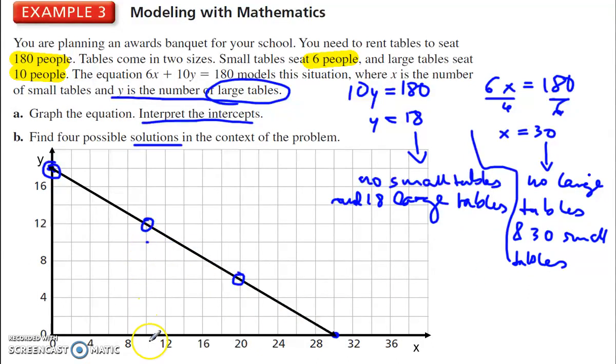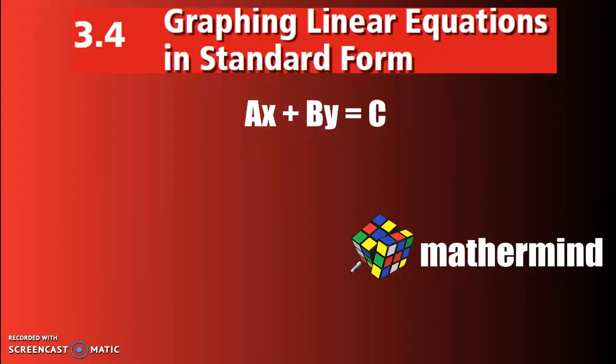This point here is 10 and 12. That's 12 small and 10 large tables. This point here is 20 and 10. That would be, no sorry, this is six. Six small tables and 20 large tables. That's what these different points mean.